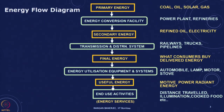Secondary energy is the electricity that we get from the power plant which is burning coal. That secondary energy itself goes through a whole network, a transmission and distribution system, and then it reaches your house or the campus. The final energy that we buy from the distribution company is then used — that electricity goes into your air conditioners, fans, and lights to give you useful energy or the end-use activities.